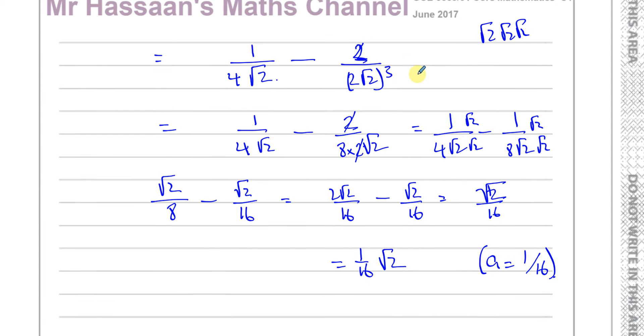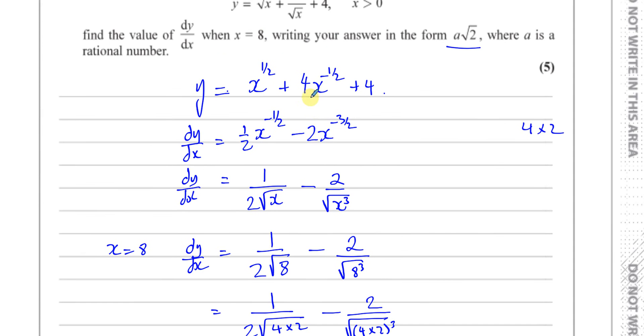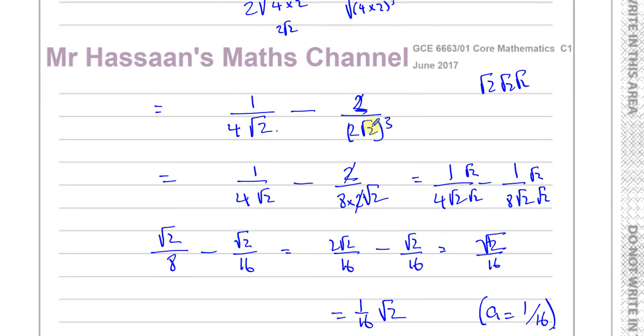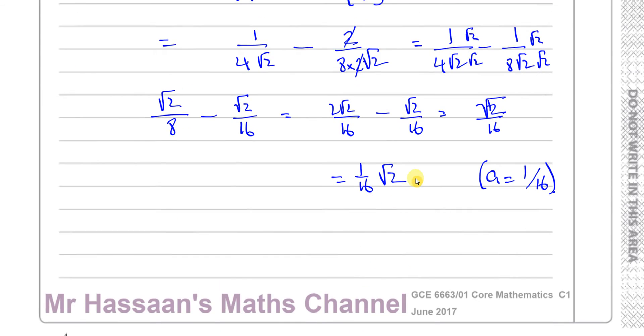And there we have the answer. So it's a very easy question in terms of differentiating. You have to just manipulate these surds to get the answer in this form.